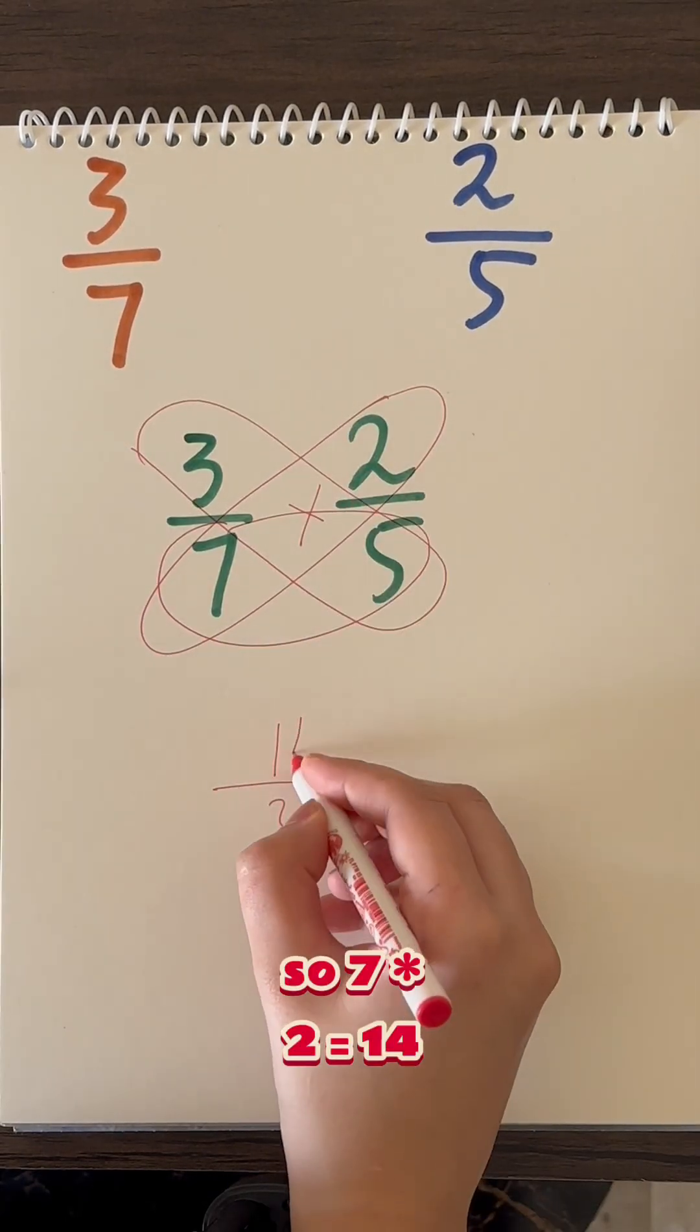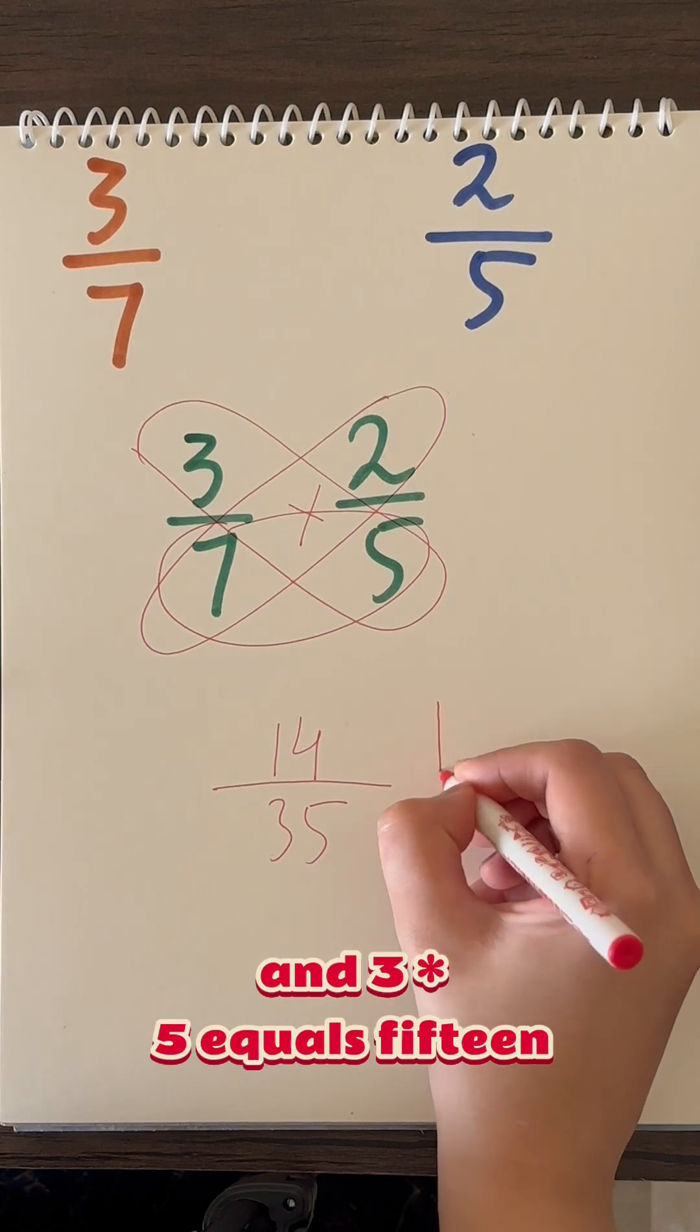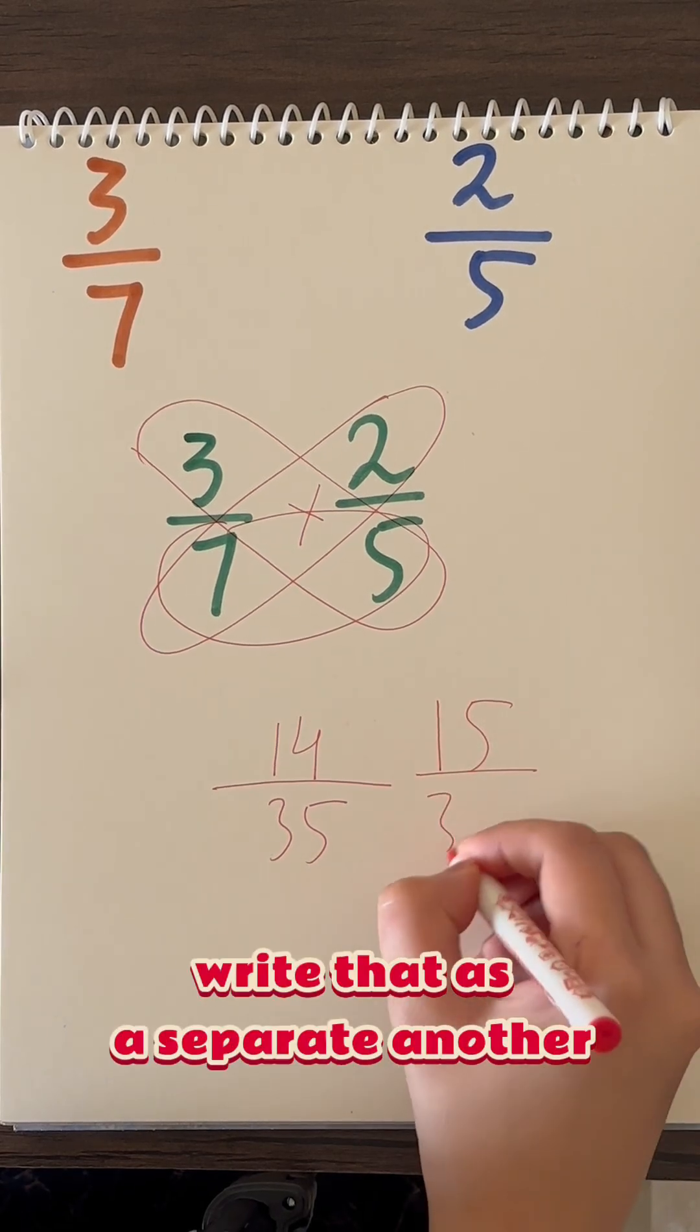So 7 times 2 equals 14, and 3 times 5 equals 15. Write that as a separate another fraction.